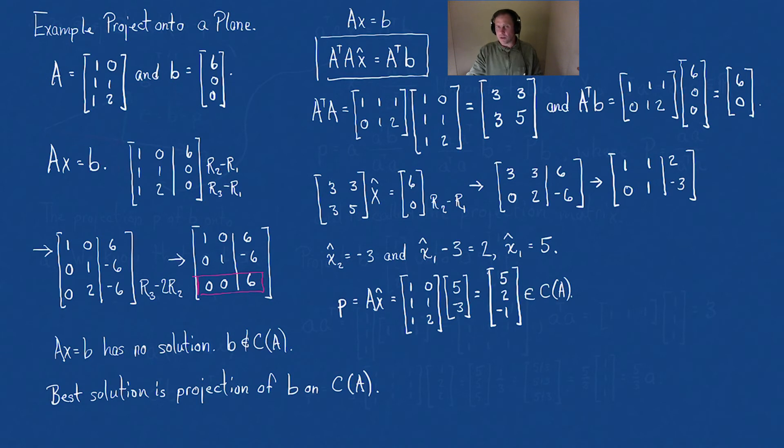But there's a little bit more to this. This vector e, remember e we said was b minus p, which is A x hat. We have both of those. b is [6,0,0] and we're going to subtract p, which is [5,2,-1]. That's going to be 6 minus 5 is 1, minus 2, and 1.